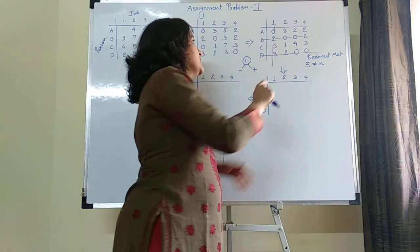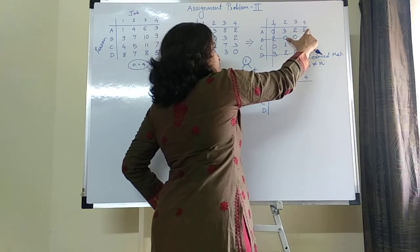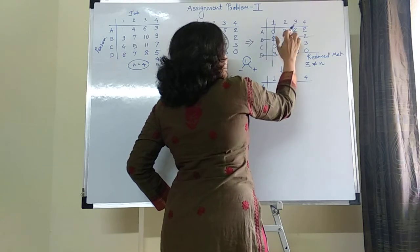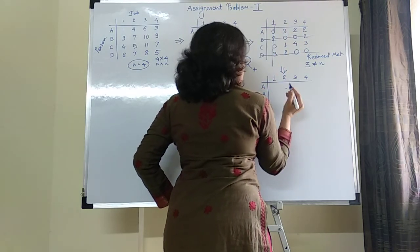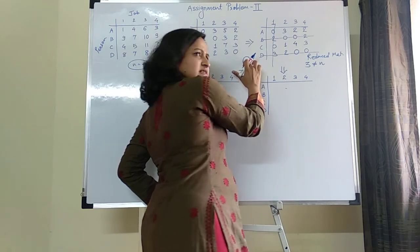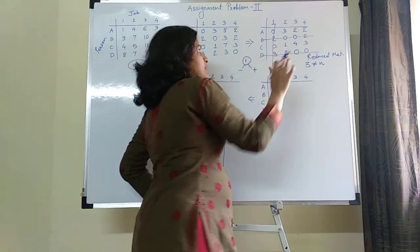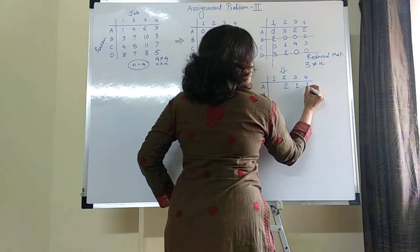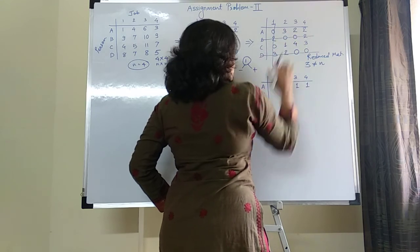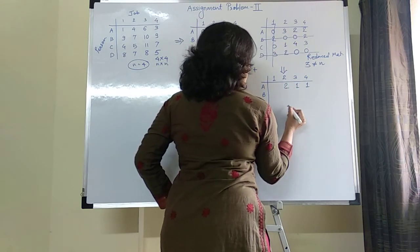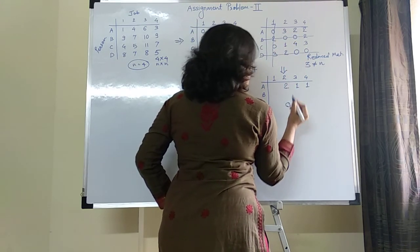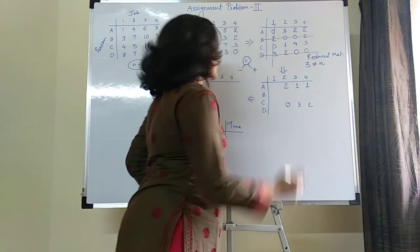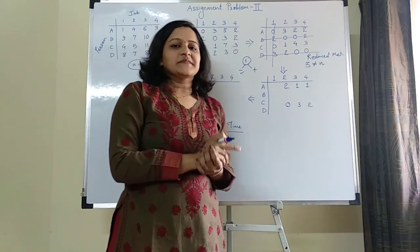Performing the minus operation: 3−1=2, 2−1=1, 2−1=1 for the uncovered positions in rows A and C. At position C2: 1−1=0. At position C3: 4−1=3. And 3−1=2. The minus operation is completed.